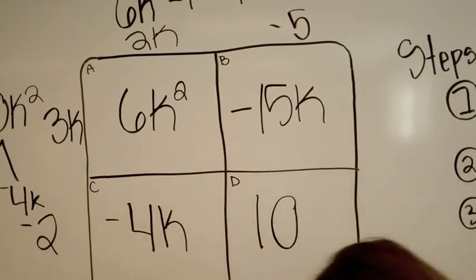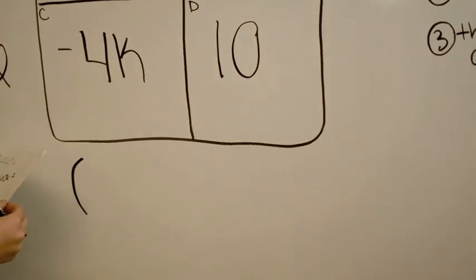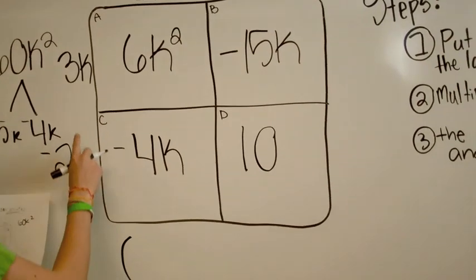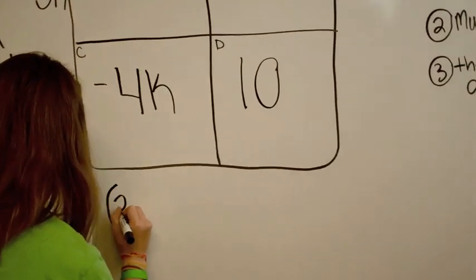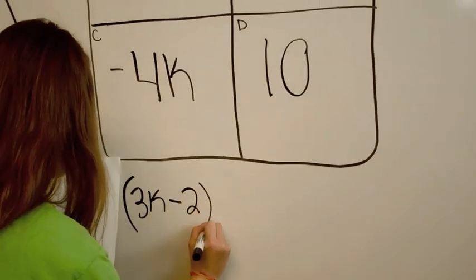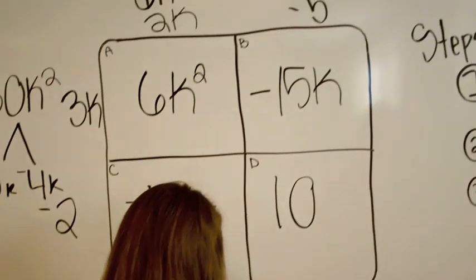All right. Now we need to multiply them out. So it would be 3K minus 2 and 2K minus 5.